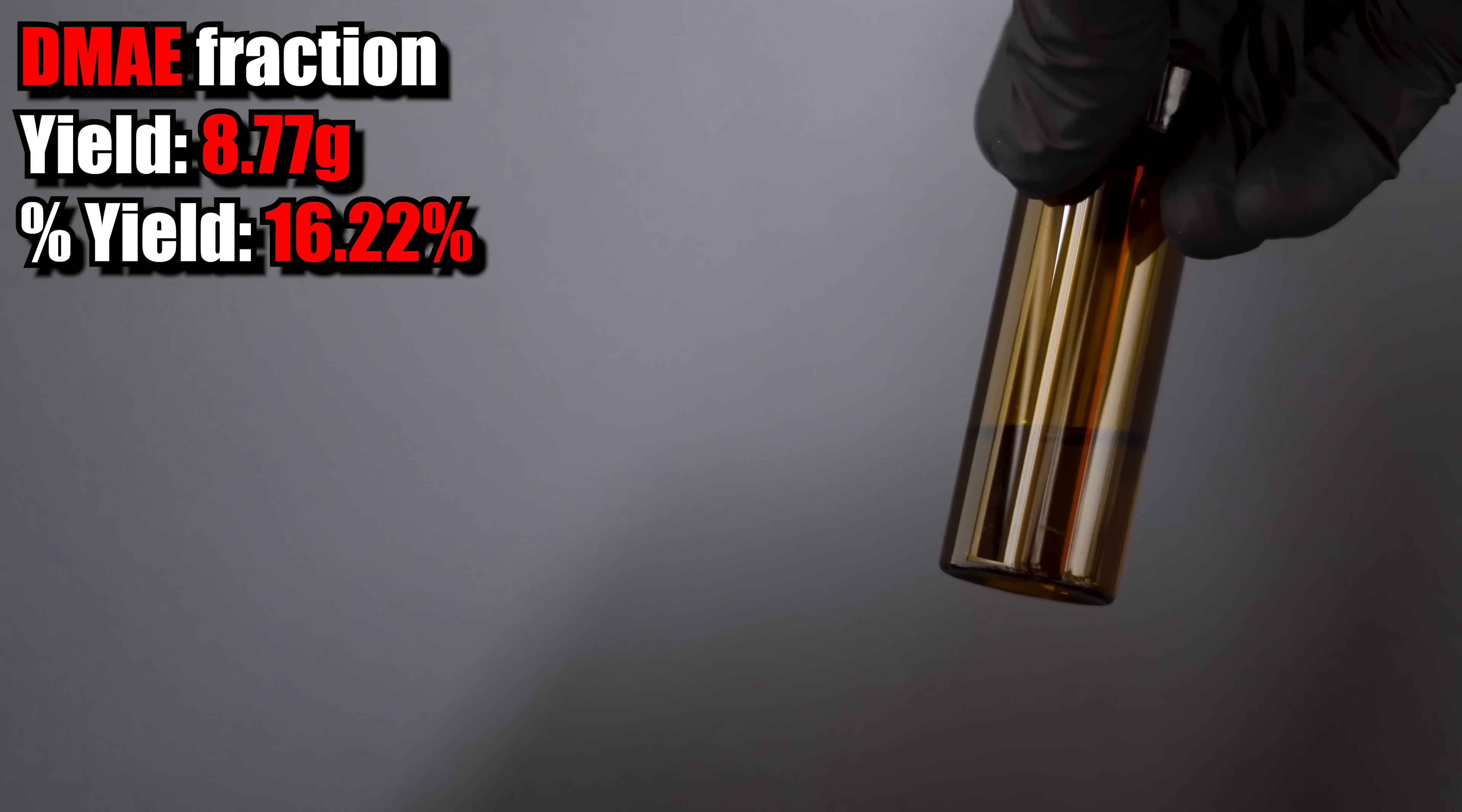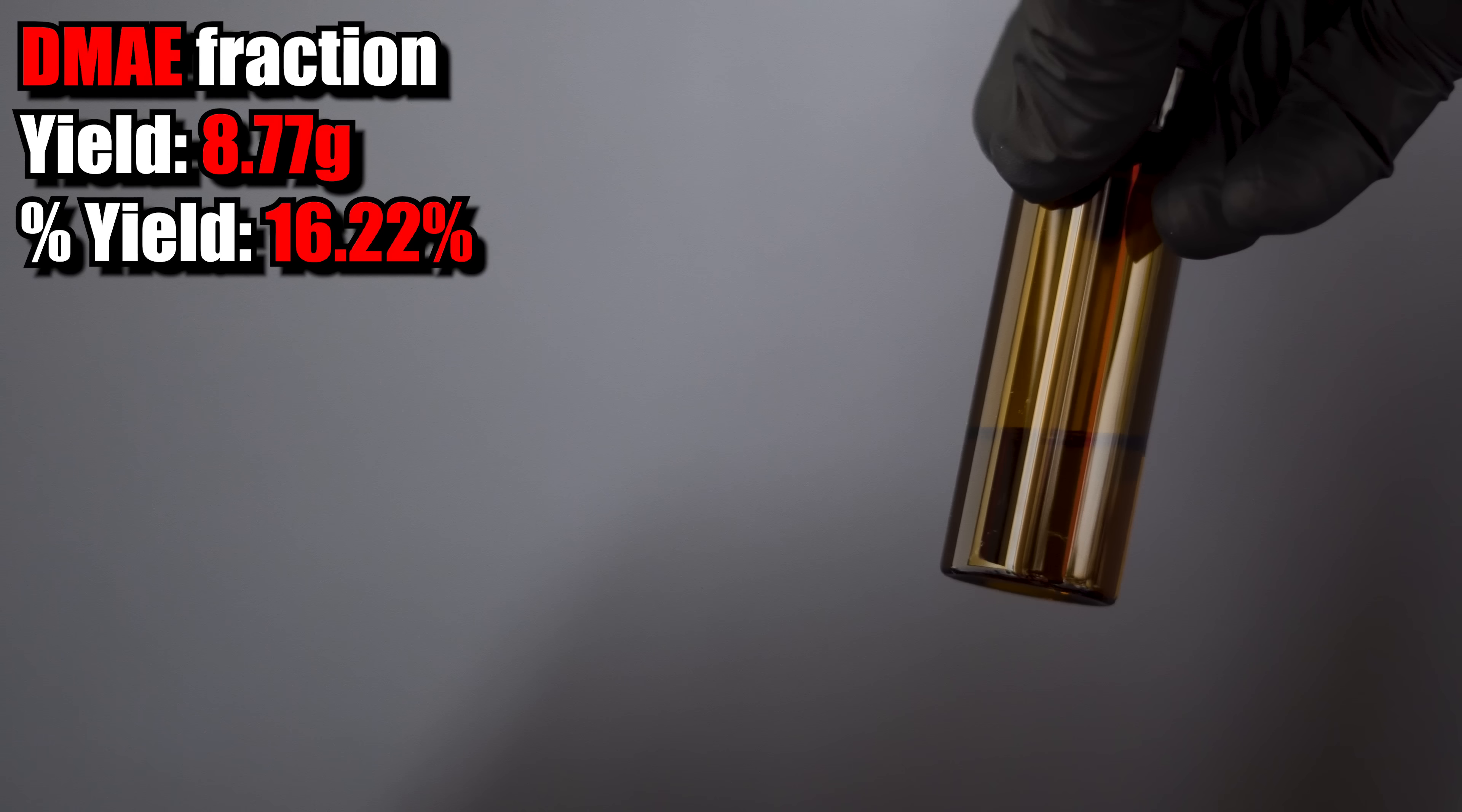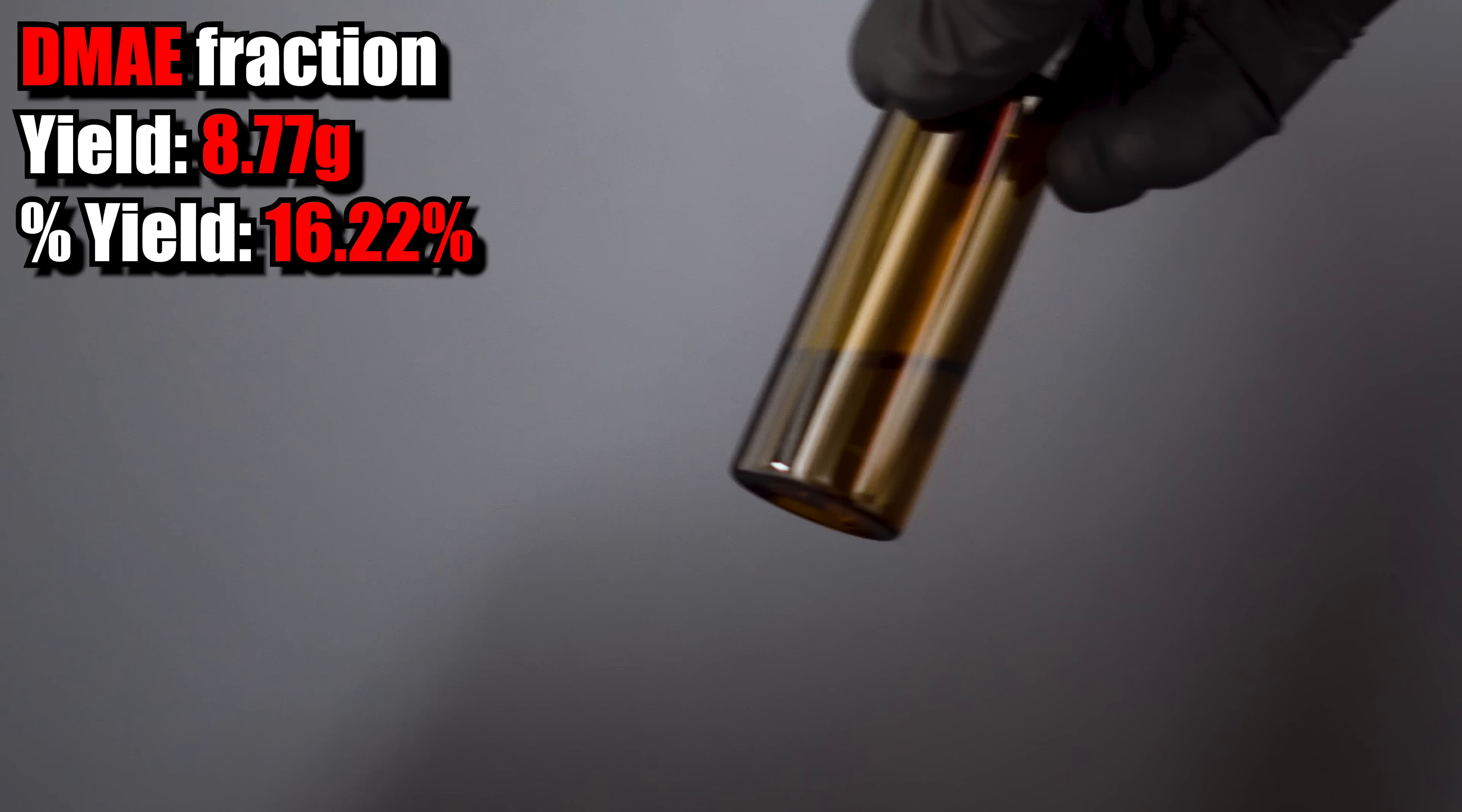In the end, I got a yield of 8.77 grams and a percent yield of 16.22%. I definitely could have got a higher percent yield if I did a vacuum filtration and I refractionally distilled the fraction between 90 and 134. This is going to be used in a future video where we make diphenhydramine.